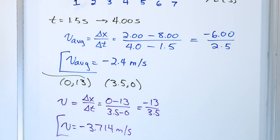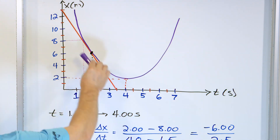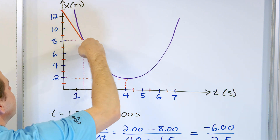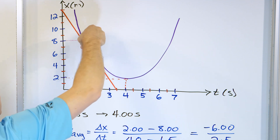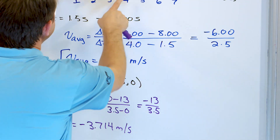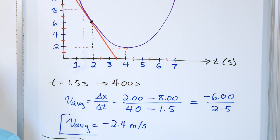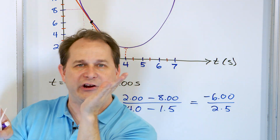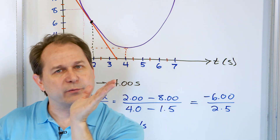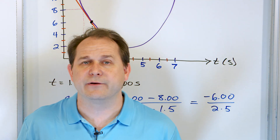We got a negative number because the slope of this line is slanted in the negative direction. The instantaneous velocity is negative, telling us we're at this position traveling toward the negative x direction — coming down closer to the origin. The average velocity in this window was 2.4 meters per second, but at this exact moment the velocity is a little bit faster. The velocity is always changing, so the average differs from the instantaneous.